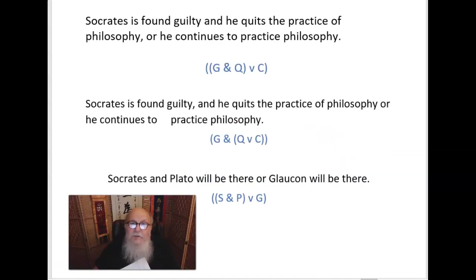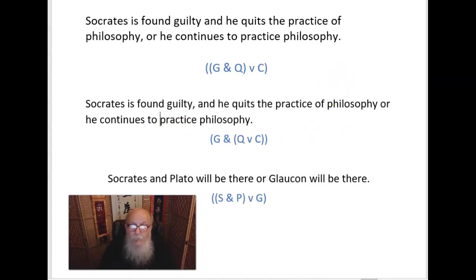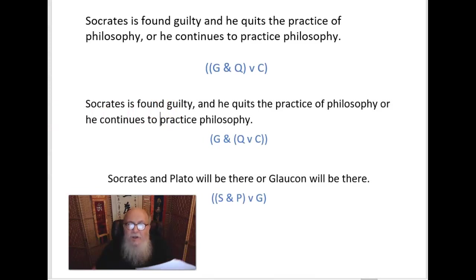Here we see in the first one: 'Socrates is found guilty and he quits to practice philosophy,' — comma — 'or he continues to practice philosophy.' Here the comma is a grouping device which divides the sentence into two parts and naturally groups these two parts together. So that gives us (G and Q) or C. And again in the second example, 'Socrates is found guilty,' — comma — 'and he quits to practice philosophy, or he continues to practice philosophy.' The comma serves to naturally break off and group these two things together: G and (Q or C).